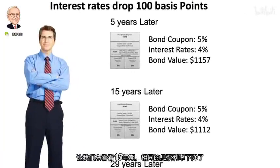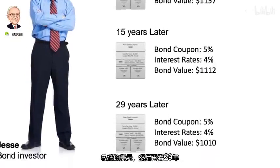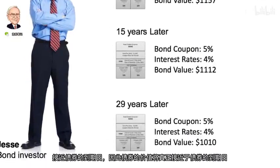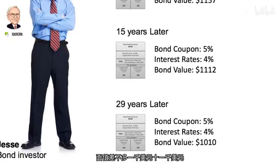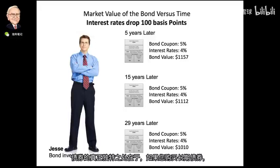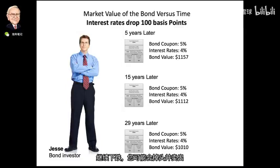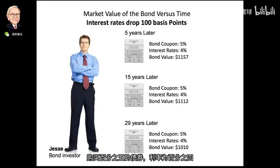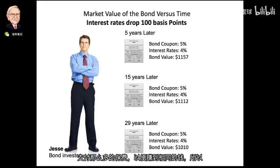At the 15-year mark, same coupon, interest rates down 1%, but his bond value is now $1,112, which is lower. And at the 29-year mark, it's really close to maturity so the bond value is close to par value at almost $1,010. What's really unique about bonds is that if you buy a long-term bond at a really high interest rate and expect rates to continue to drop, you could turn around and sell the bond only a couple years later for an enormous premium.